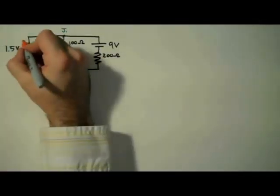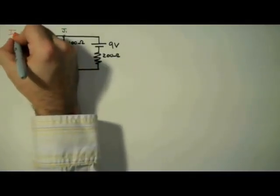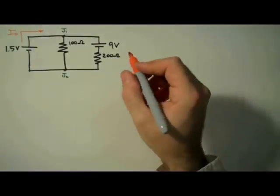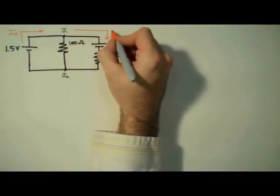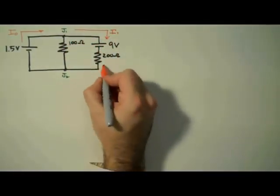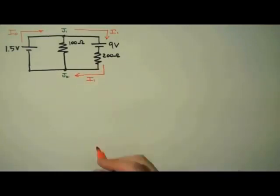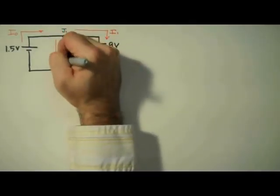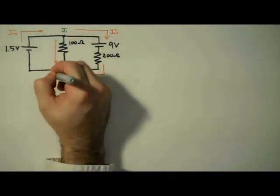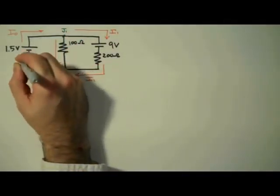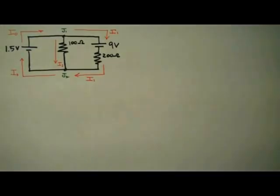Next, we label our currents. I'm going to label this current I0. After junction 1, I'll have I1 on the right leg. Note that I0 does not pass through junction 1. This middle leg will be I2. And when I1 and I2 rejoin, we have I0, because the current coming out of that 1.5 volt battery needs to be the current coming back in. Also note that the directions of these currents at this point are arbitrary.